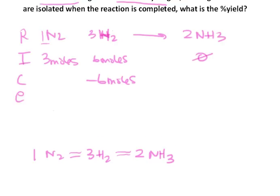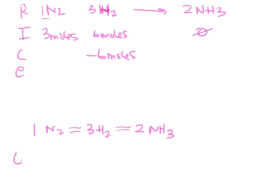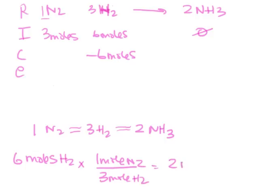How much of our nitrogen will be consumed? You can always look at this by, or find this by looking at the reaction stoichiometry. So, six moles of hydrogen. So, one mole of nitrogen for every three moles of hydrogen gives you two moles of nitrogen. So, you'll lose two moles here.